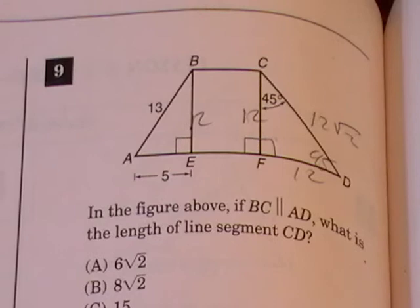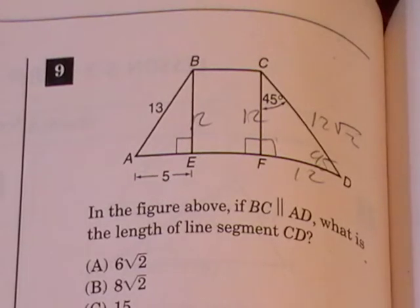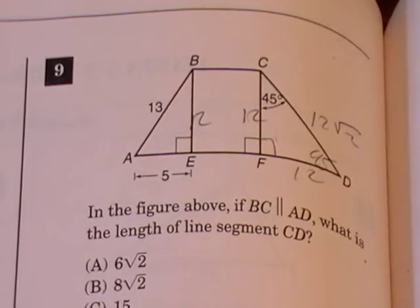We notice on the left-hand side of the diagram, we get values for the hypotenuse and one of the legs for a right triangle, 13 and 5 respectively. So we want to find the value for that remaining leg.